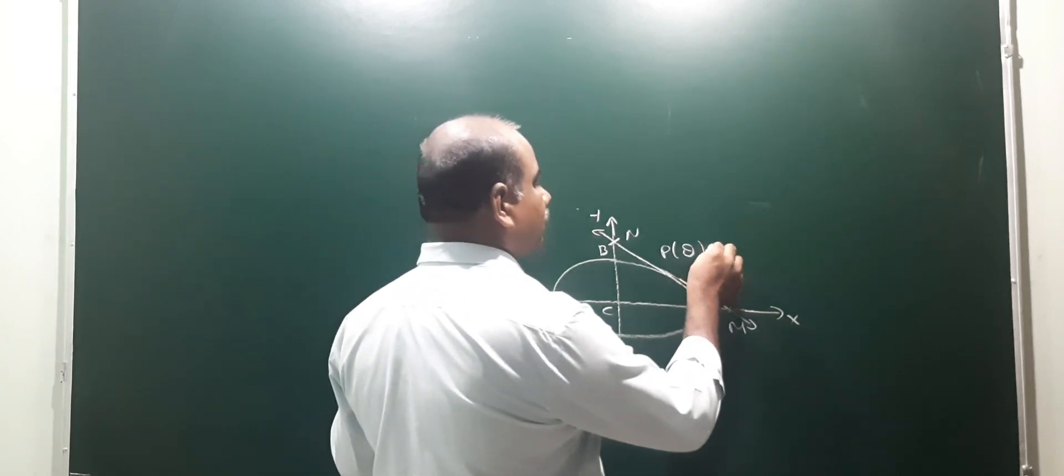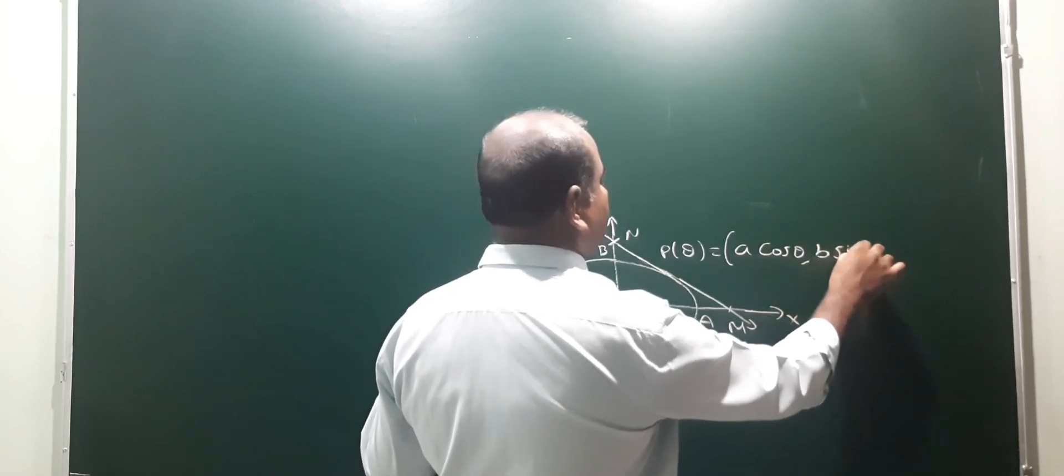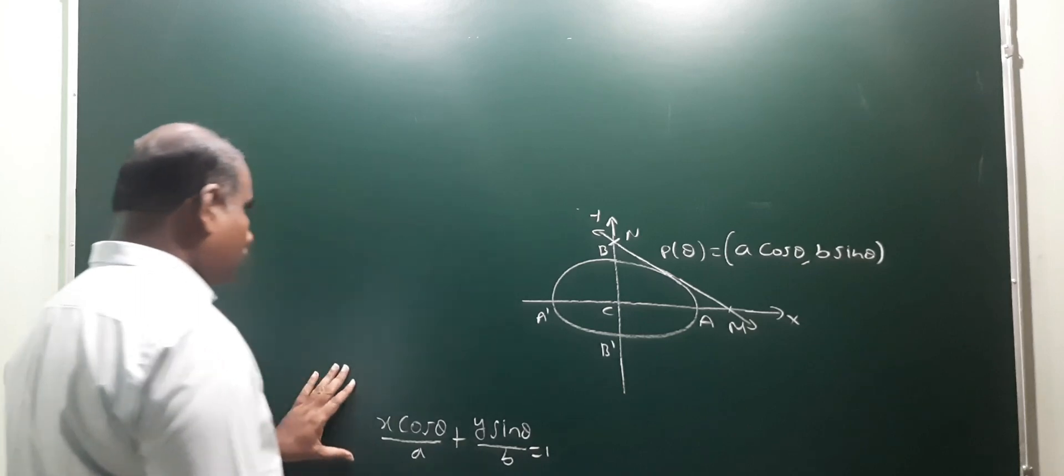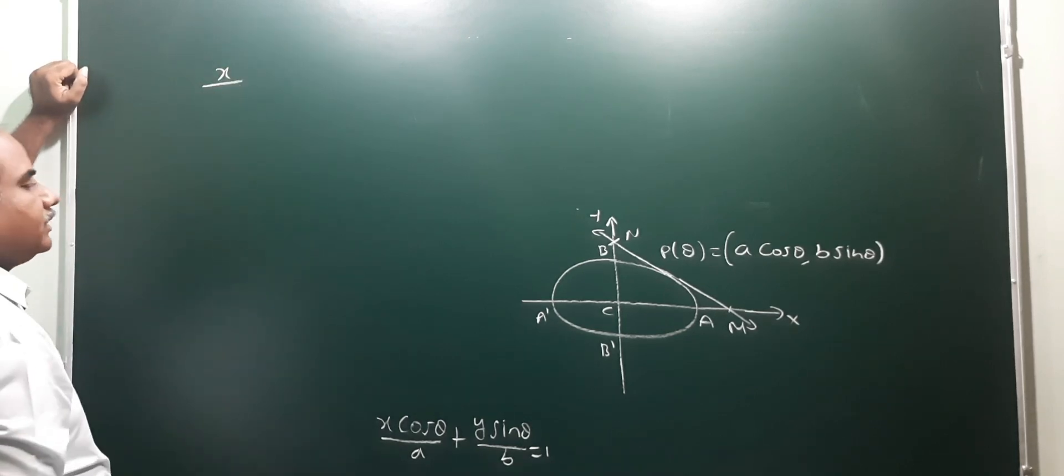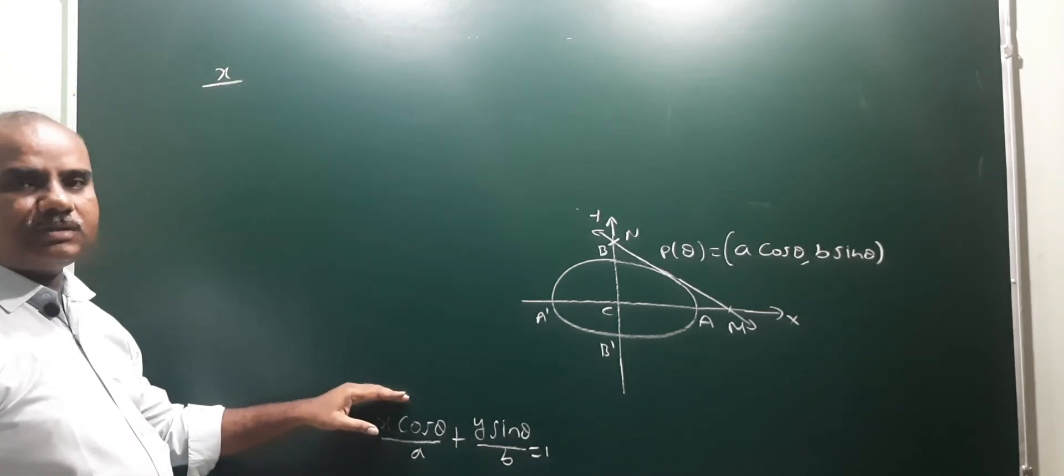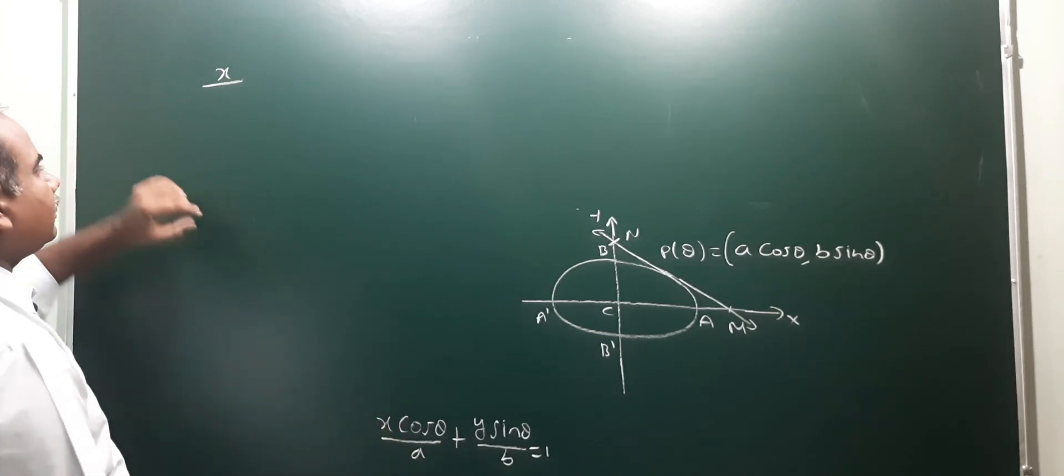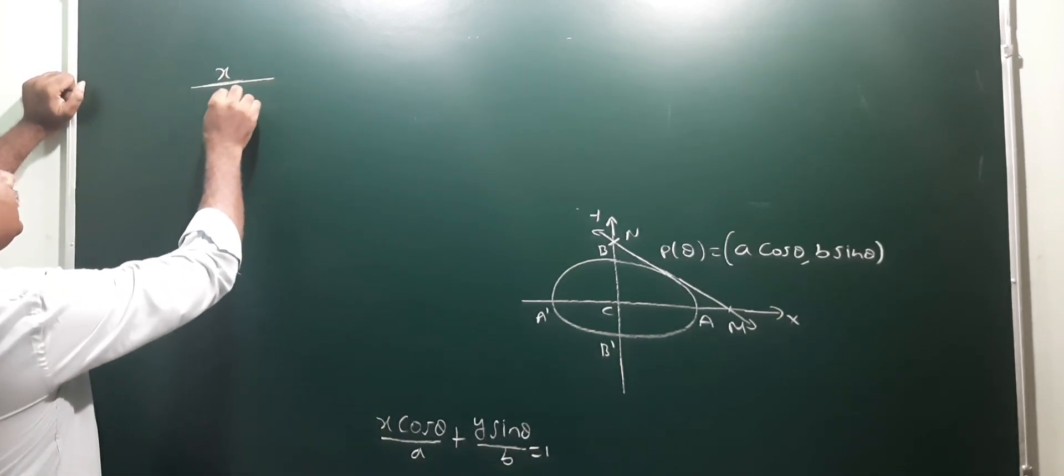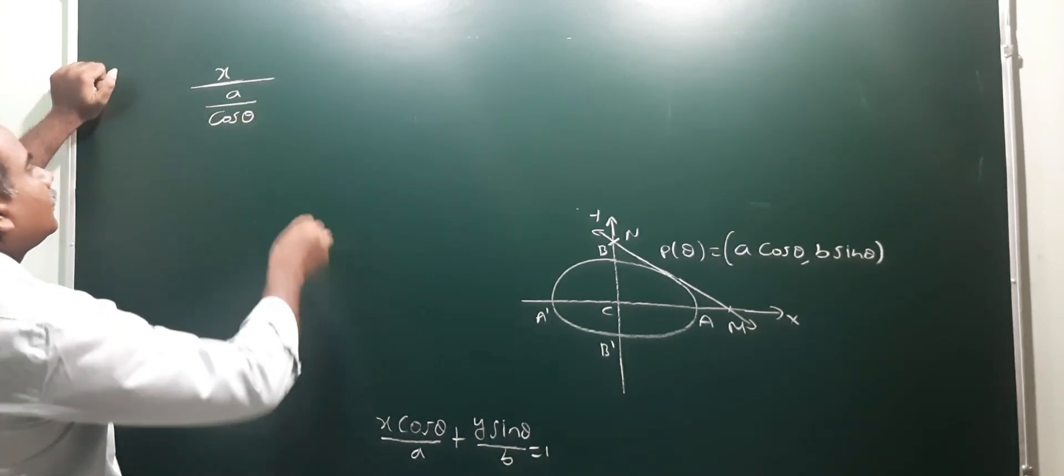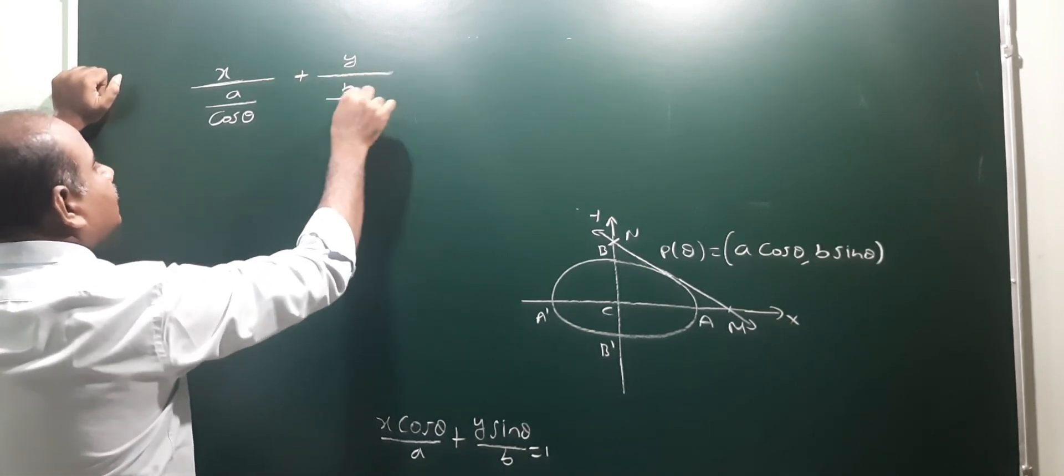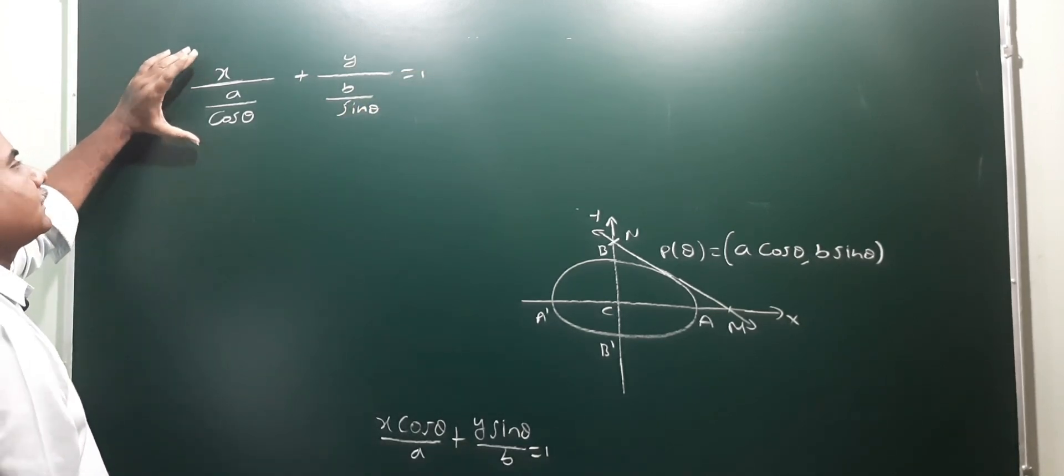P theta, parametric form P theta means a cos theta comma b sin theta. So equation of tangent in intercept formula: X by A plus Y by B. Where the coefficient is A, so X by a cos theta plus Y by b sin theta is equal to 1. Now it is in intercept form.